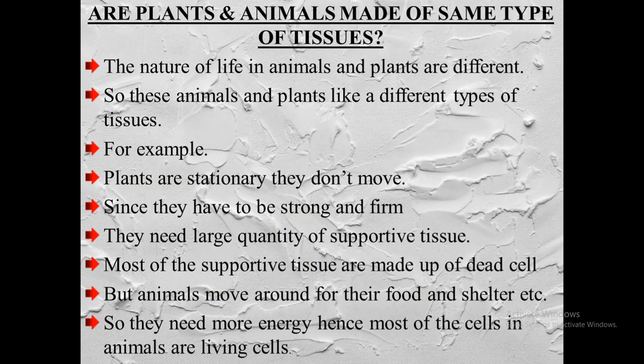Are plants and animals made up of the same type of tissues? The nature of life in animals and plants is different. Yes, all plants have tissues, but they are not similar to animal or human tissues — they are totally different from each other based on their requirements, structure, and functions.